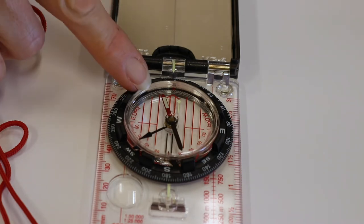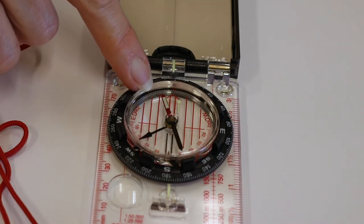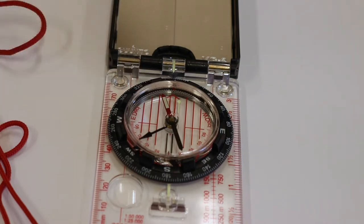A compass needle points to magnetic north, not true north. The difference in these is known as magnetic declination.